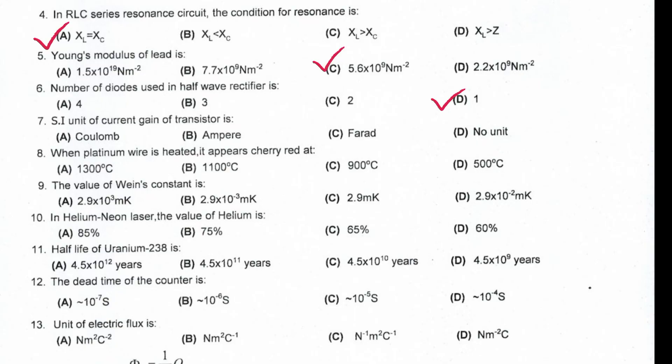SI unit of current gain of transistor is no unit. When platinum wire is heated, it appears cherry red at 900 degrees Celsius.